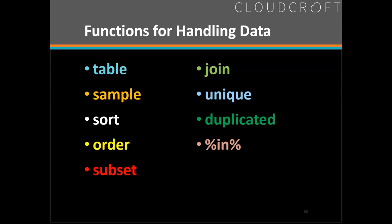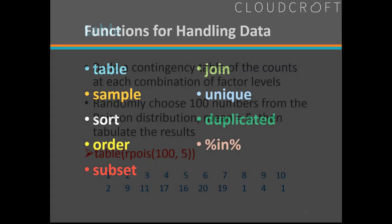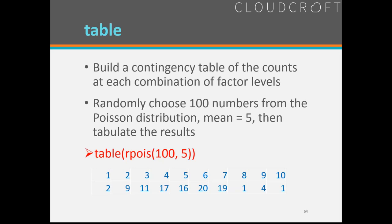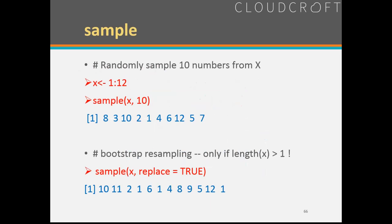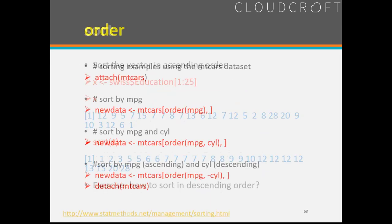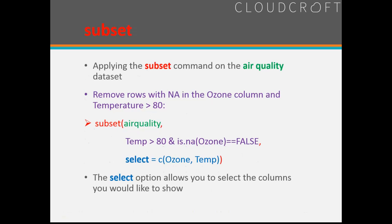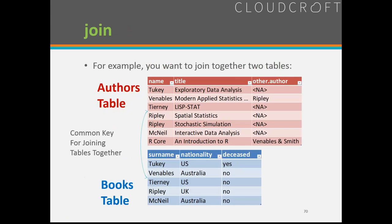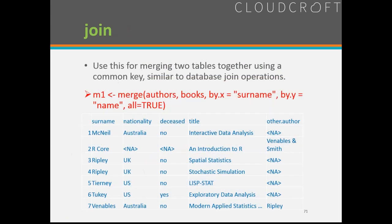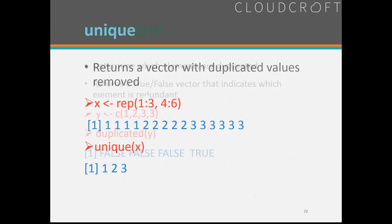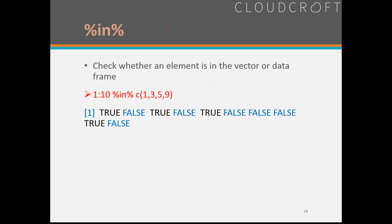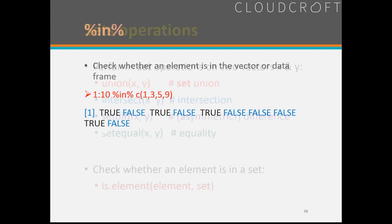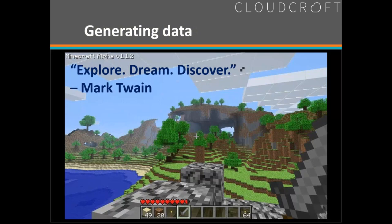Functions for handling data — table, randomly choosing numbers, different samples to play with, sort, order, subsets, creating author tables, joining tables, merging, looking for unique values, looking for duplicated values, checking for data in sets, etc. We're going to look next at generating data very quickly.